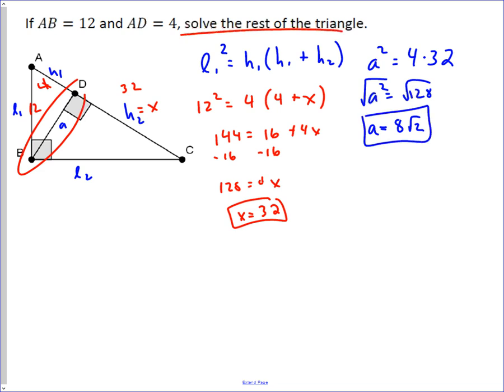So now we know the length of H2, we know the length of A, the length of L1, the length of H1, so we need to find L2. And again, we have a formula for it, and that is L2 squared is equal to his side of the hypotenuse, H2, times both of those. L2 we don't know, so we're going to call it Y.